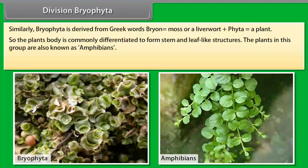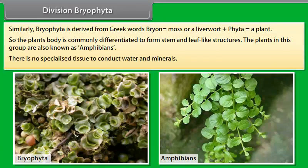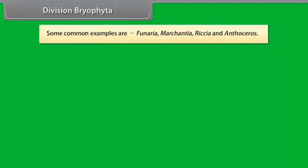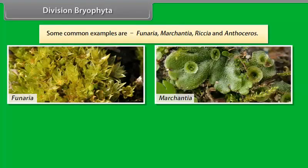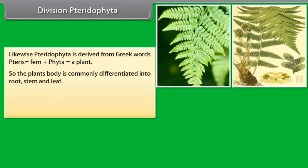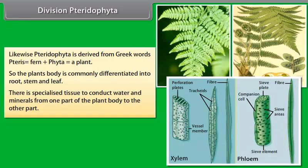Division Thallophyta. Thallophyta is derived from the Greek words Thalus, meaning plant body without root, stem and leaves, plus Phyta, a plant. So these plants do not have a well-differentiated body design. The plants in this group are commonly known as algae. Thallophytes are mainly aquatic plants. Some common examples of algae are Spirogyra, Chara, Cladophora, and Ulva.